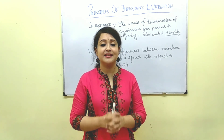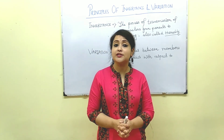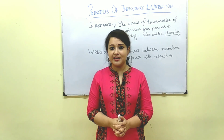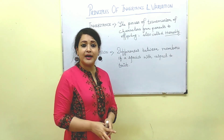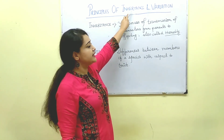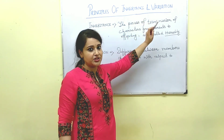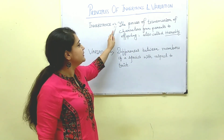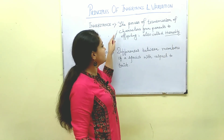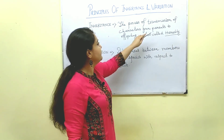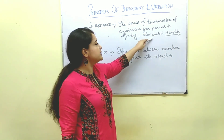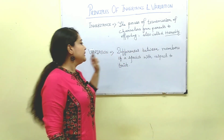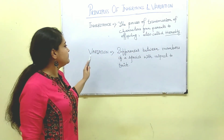Remember, this chapter is a very much conceptual chapter. So let us begin. We have to understand these two terms: one is inheritance and the second one is variation. Inheritance is the process by which transmission of character from parent to offspring occurs — it's also known as heredity.